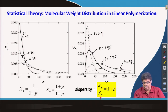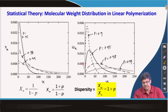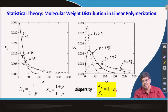So, what you should remember from this section: this is what the number distribution looks like, this is what the weight fraction distribution looks like, and for a high molecular weight step polymer the dispersity value is always near 2, but in practice we get slightly above 2.